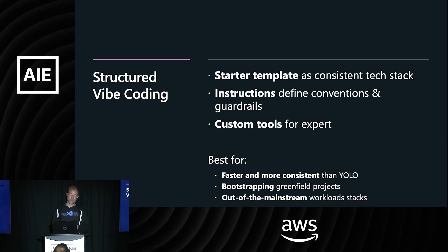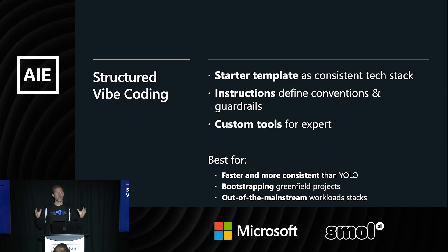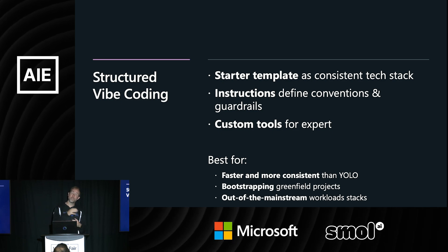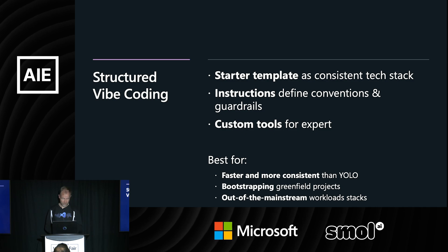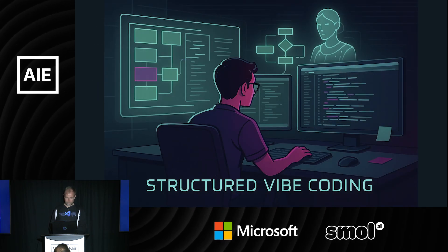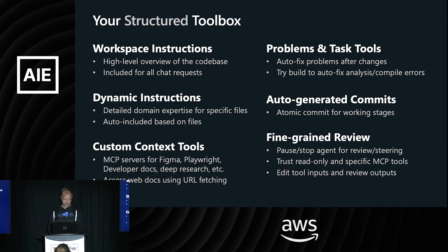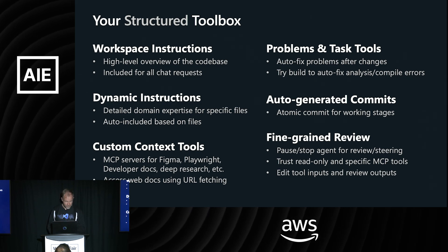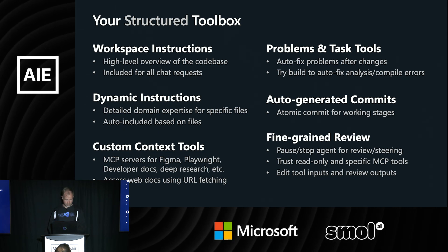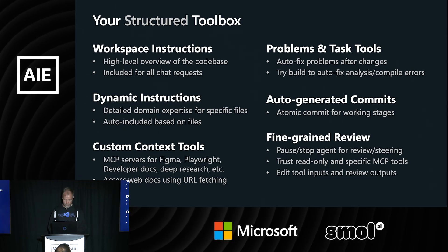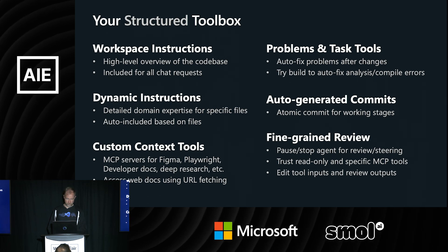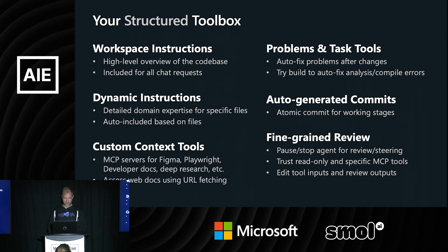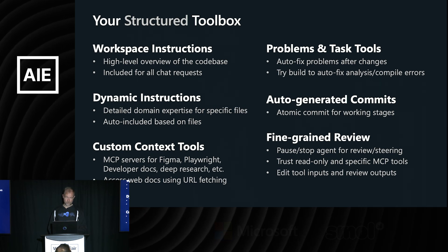It's really great for bootstrapping greenfield projects because you end up with something people can hand over to engineering and engineering doesn't say 'this is totally not what we're doing.' It's also better for off-mainstream things — anything not popular, like a specific Spring Boot version that AI struggles with, you can add more instructions so it gets it right more often. There's a nice template repo on GitHub at github.com/digitarout — frontend vibes template — that I put up.